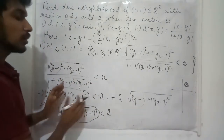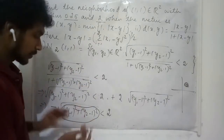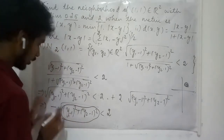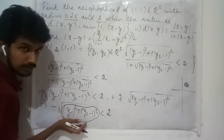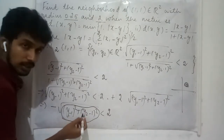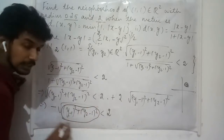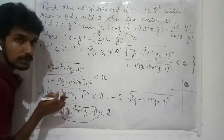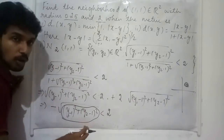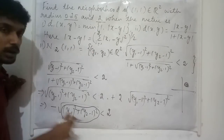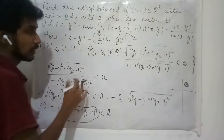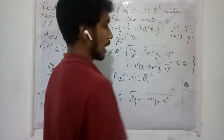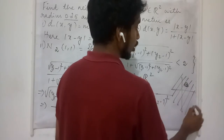We need to identify what points in R² satisfy this condition. Whatever value you substitute, this entire part is non-negative, and when you negate it, it becomes negative or zero. All negative quantities and 0 are less than 2, which means we don't have any restriction. Whatever point you substitute, this inequality will be satisfied. In this case, N₂(1,1) is going to be the entire R². The entire plane is going to be the neighborhood.